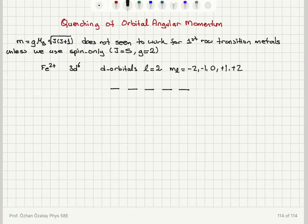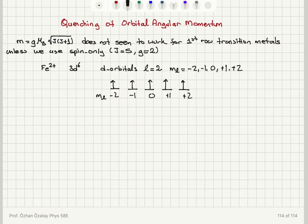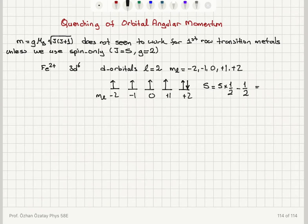First we put an electron with up-spin at +2, +1, 0, −1, and −2, trying to maximize spin according to Hund's rules. The sixth electron must go into the +2 level again because we are also trying to maximize L, the total orbital angular momentum. This gives a total spin of 5×(1/2) − (1/2) for the sixth electron, so S = (5/2) − (1/2) = 4/2, meaning capital S = 2.